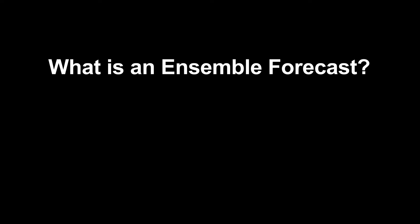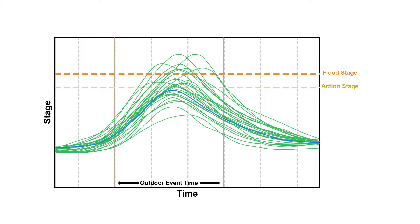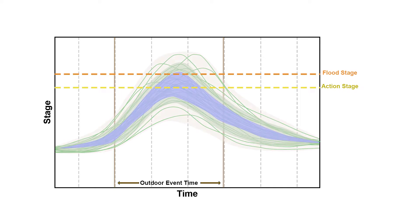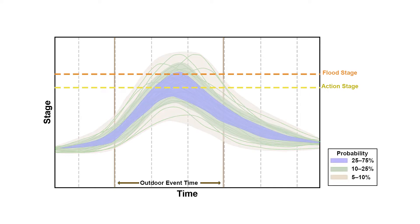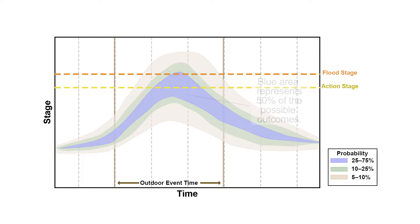A multi-value forecast, also called an ensemble forecast, can help account for this uncertainty by showing a range of possible river levels. Working with this series of possible forecasts, we can derive the probabilities for different outcomes. This information allows decision makers to plan their actions based on known risks. We can see that there may be a relatively high probability of the river level passing the action stage and reaching an initial flood stage at a specific time.